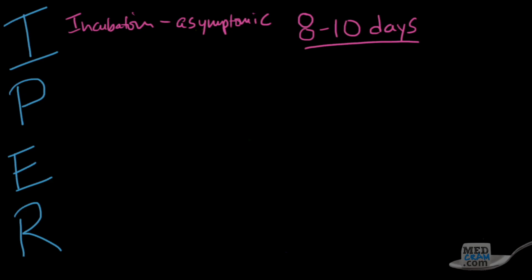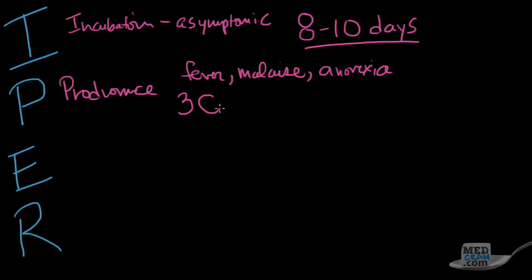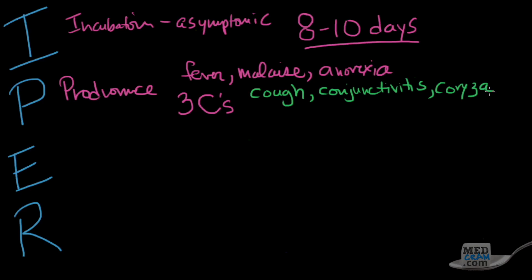The prodrome is an interesting period — it's here where you see the three C's. The first things that come on are constitutional symptoms such as fever, malaise, and anorexia — meaning they don't want to eat. Very characteristic of this stage are the three C's: cough, conjunctivitis — where the area around the eye is inflamed and red — and coryza, which is rhinitis or inflamed nasal mucosa, essentially a runny nose. These three together with fevers, especially during an outbreak, should make you think of measles.